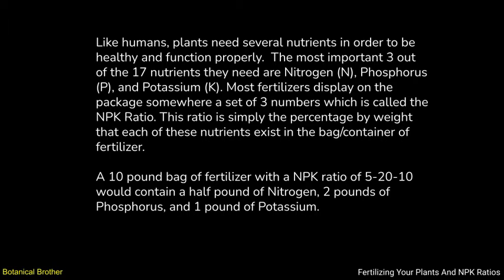A 10 pound bag of fertilizer with the NPK ratio of 5-20-10 would contain a half pound of nitrogen, two pounds of phosphorus, and one pound of potassium.